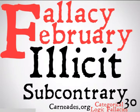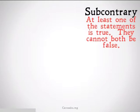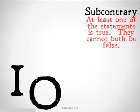If you haven't checked out my video on subcontrary as it stands, you might want to check that out now. We learned that subcontrary is the relationship when at least one of the two statements is true — they can't both be false. This relationship exists in Aristotelian logic between I and O statements.